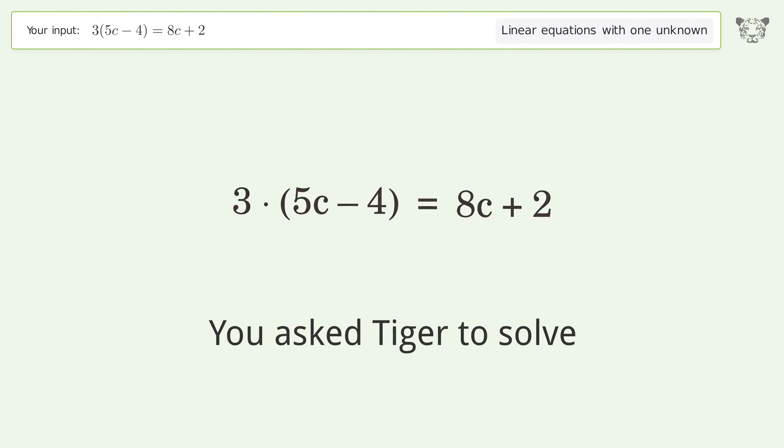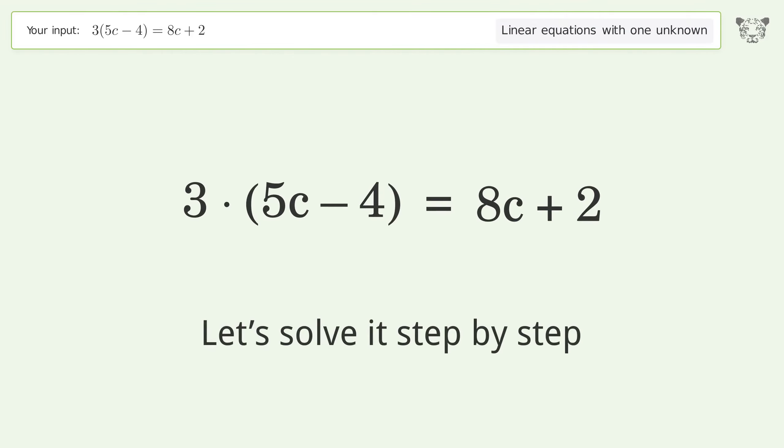You asked Tiger to solve this. This deals with linear equations with one unknown. The final result is c equals 2. Let's solve it step by step.